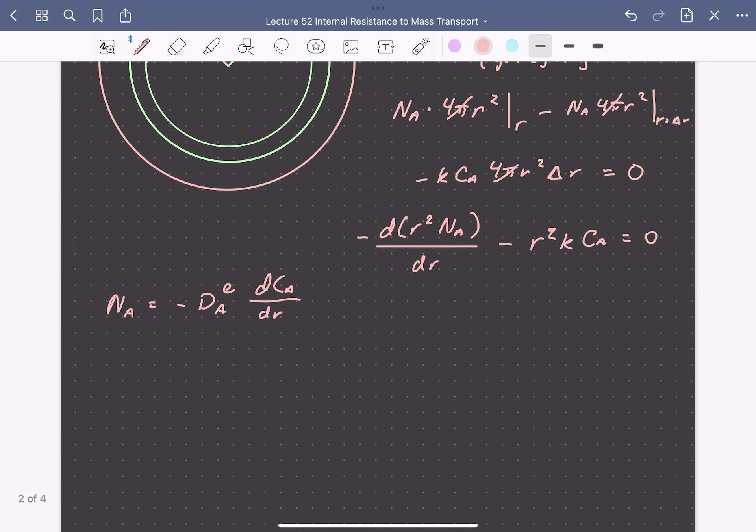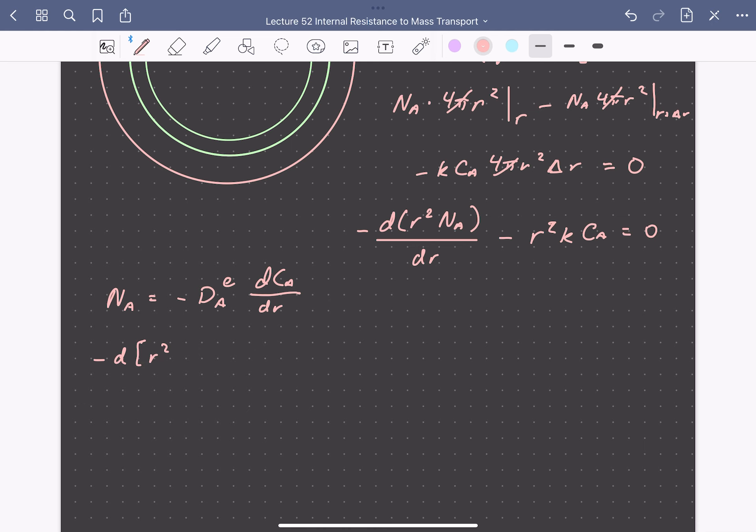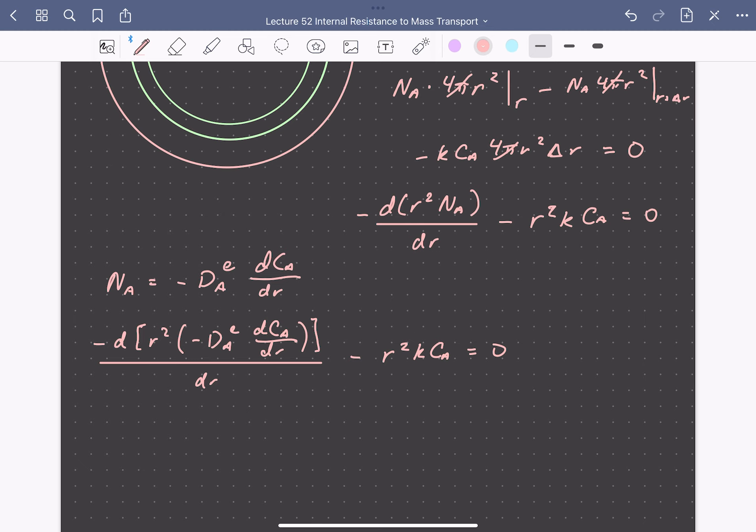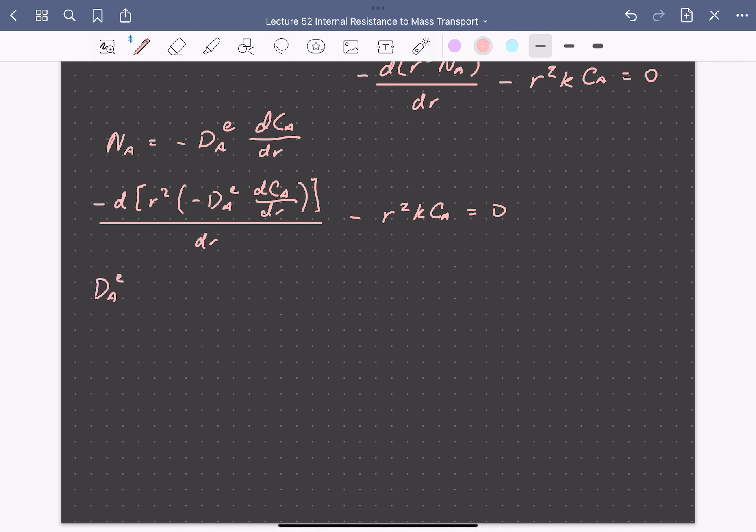So introducing this into our differential equation, we can write an expression that looks like this. So we can simplify this derivative on the left-hand side. And then dividing through by R², we can arrive at our final differential equation. So this will be that the effective diffusivity squared times the second derivative of concentration of A with respect to position R plus 2 over R·dCA/dr minus K·CA equals zero.